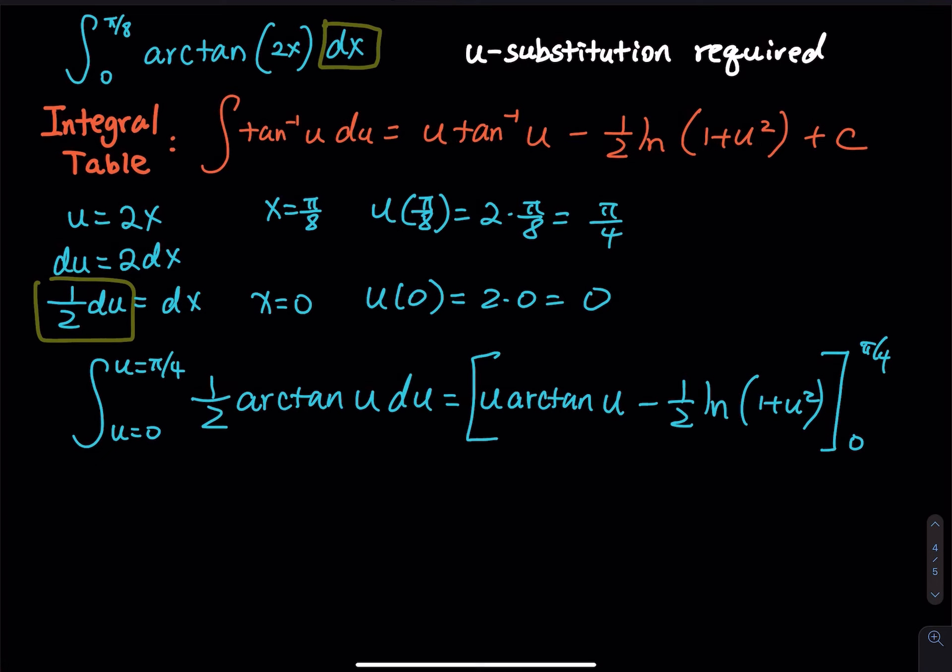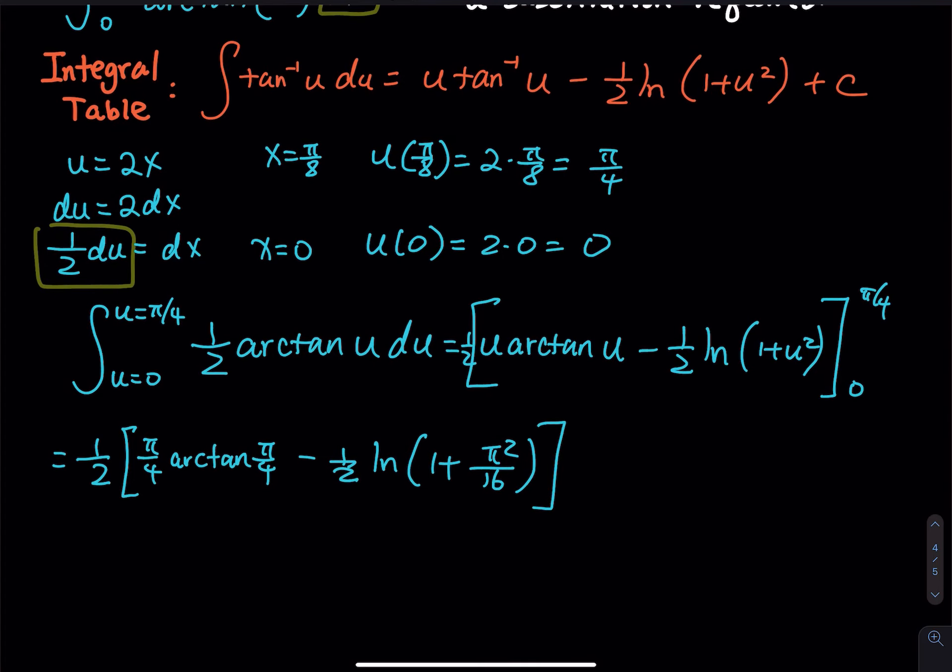So first, we plug in the π over 4. Looks like I forgot the 1 half. So write the 1 half, and then we plug in the π over 4. So we have π over 4 times arc tangent π over 4 minus 1 half, 1 half, and then ln, 1 plus π over 4 squared. Then that will be a π squared divided by 16. So that is for the π over 4.